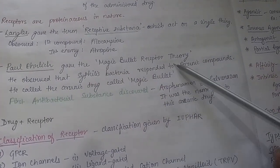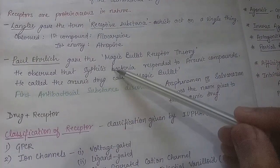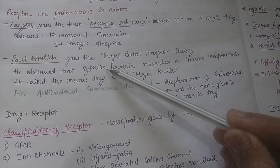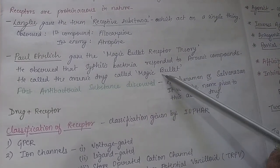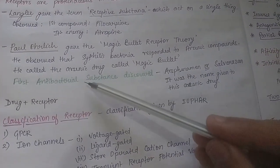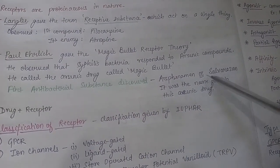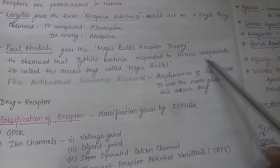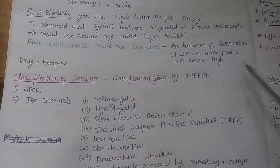The next is Paul Ehrlich, who gave the term 'magic bullet receptor theory.' He observed that syphilis bacteria responded to arsenic compounds - arsenic compounds can kill syphilis bacteria. He called this arsenic compound a magic bullet, meaning it targets a particular substance, that is the receptor. The first antibacterial substance discovered was arsphenamine, also known as Salvarsan.